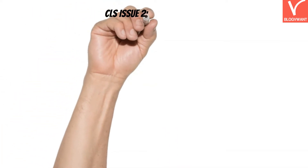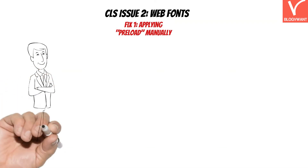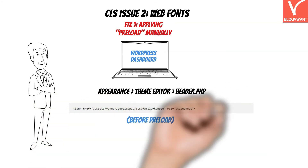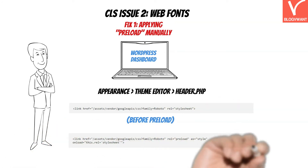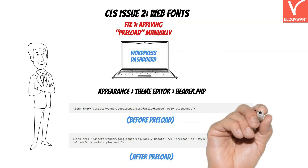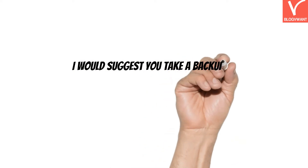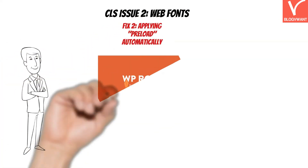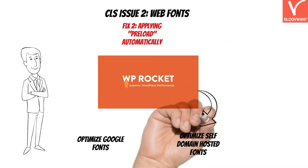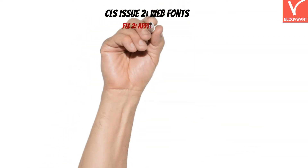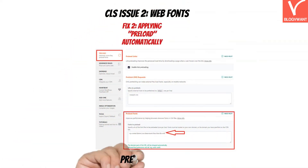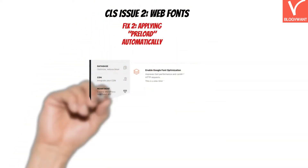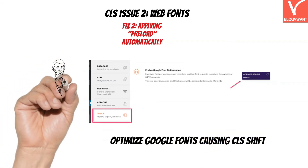Google PageSpeed suggests applying preload on all high-priority resources. In the first fix, you can apply preload on hosted fonts manually. If fonts are hosted from Google Fonts, you'll find the link in the header.php file of your website. Simply add the rel="preload" attribute and link back to the CSS file. Take a backup of header.php before making any changes. Those who don't want to deal with code can use WP Rocket — it handles both Google-hosted and self-domain-hosted fonts. Use the Preload module for self-hosted fonts, or navigate to the Tools tab and enable the Google Font Optimization module for Google Fonts.